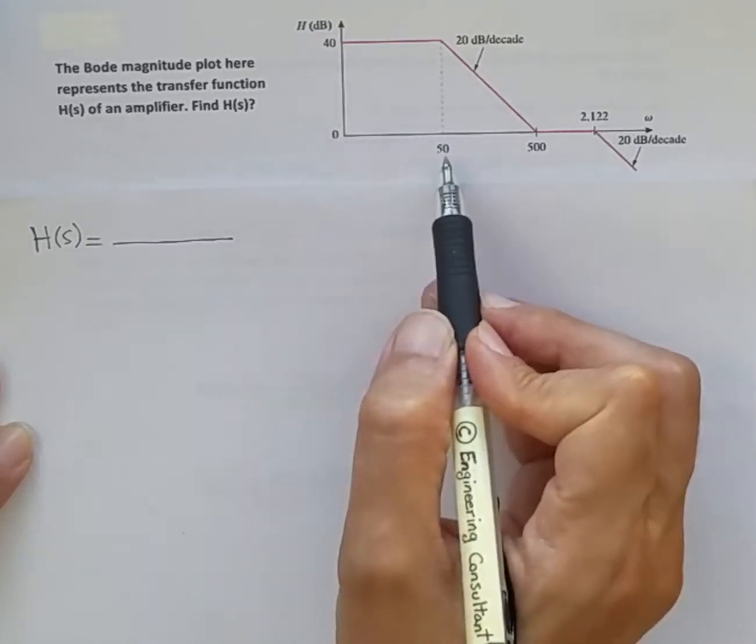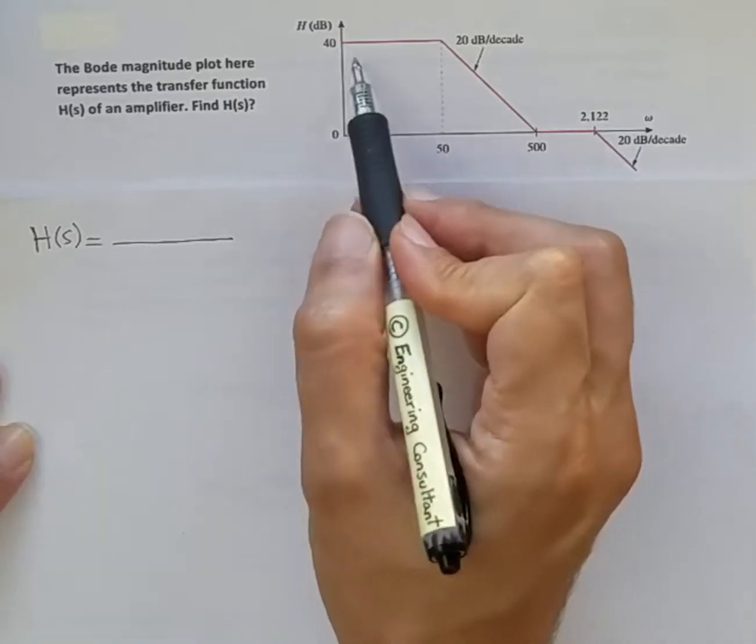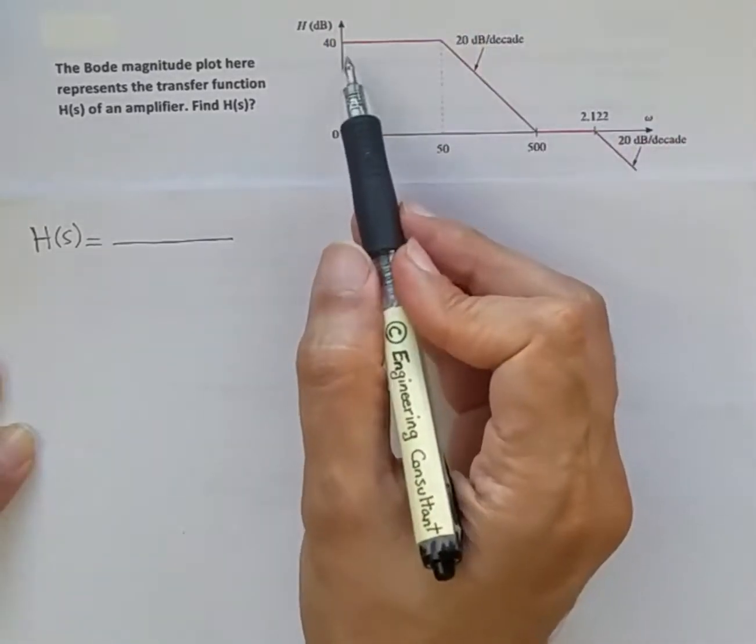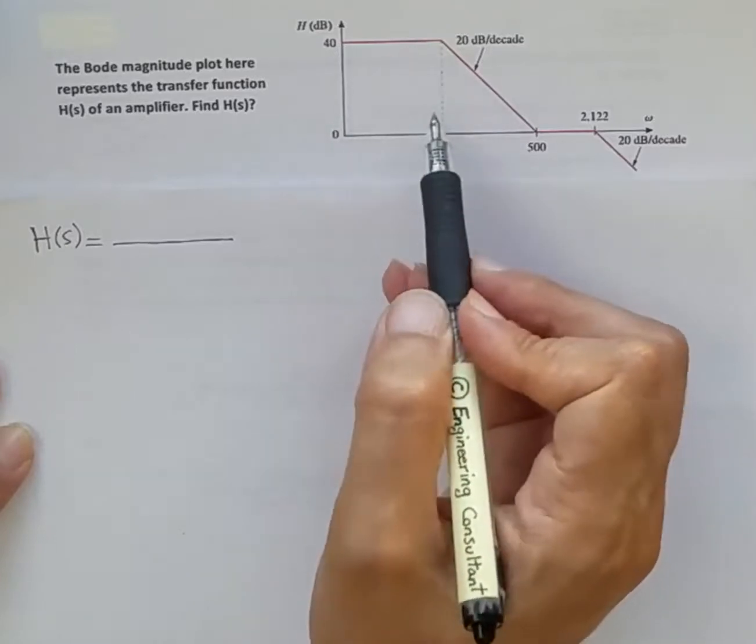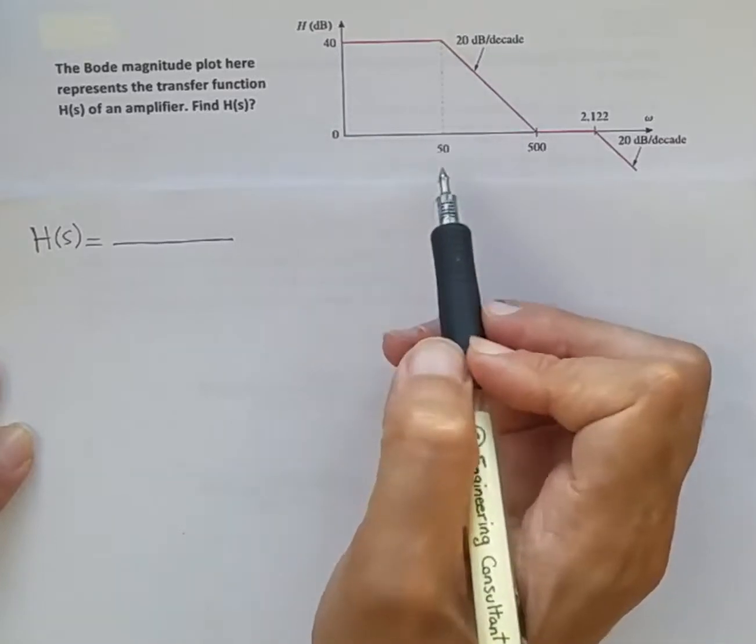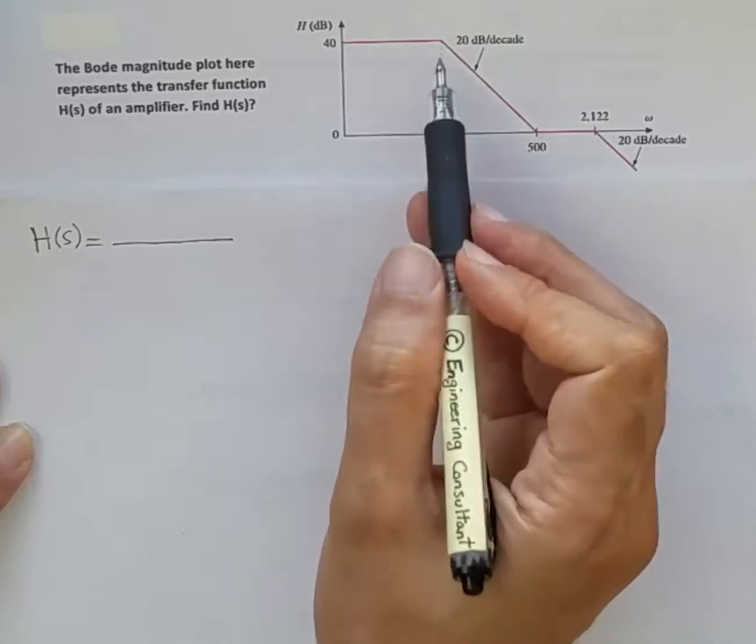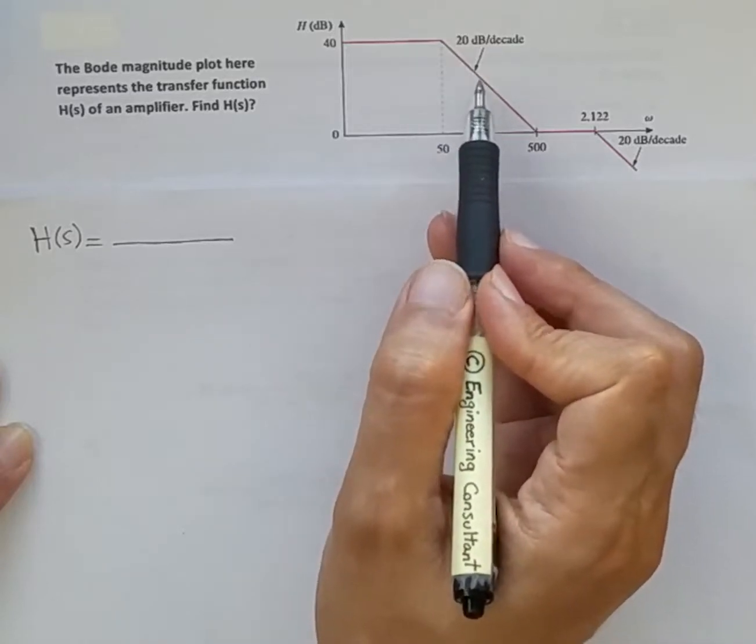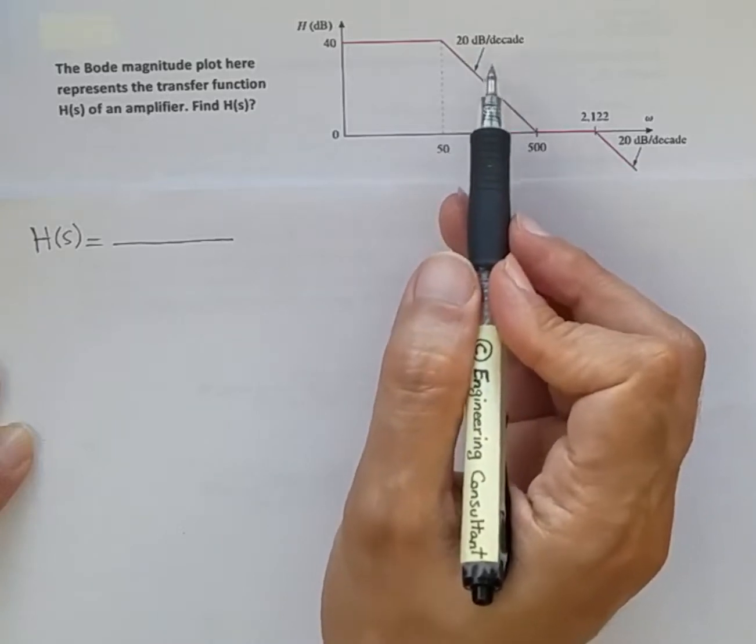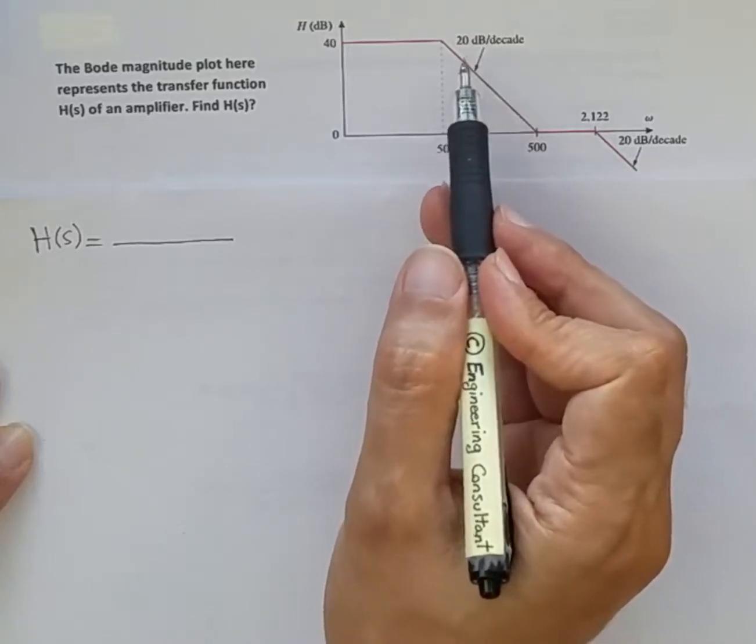There is nothing there, and then suddenly when we get to 50 radians per second, the magnitude starts dropping at a rate of 20 dB per decade, or per 10. This means a 20 dB drop in magnitude for every 10x increase in frequency.